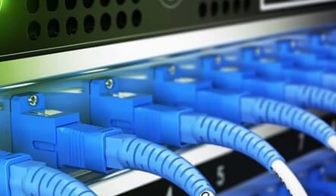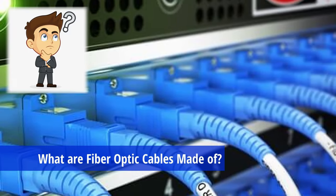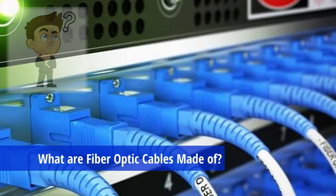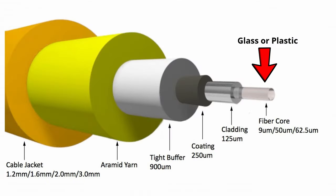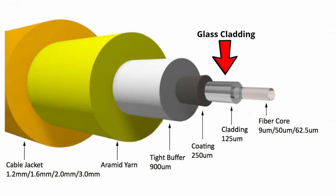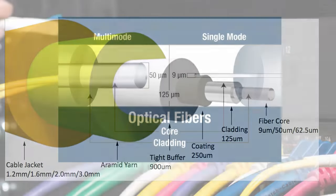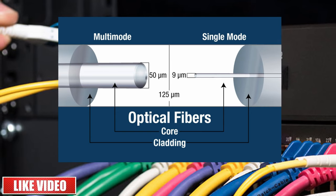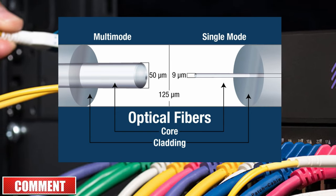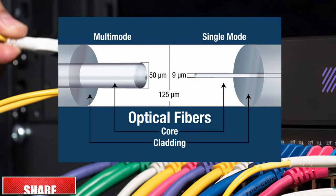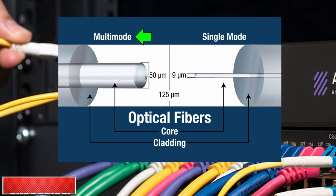Before I can answer that question, let's talk about what fiber optic cables are made of. A fiber optic cable is made from a glass or plastic core that carries light, surrounded by glass cladding that reflects escaping light back into the core, resulting in the light being guided along the fiber. The two most common types of fiber cabling are single mode and multi-mode. Of these two types, multi-mode fiber is more commonly used.